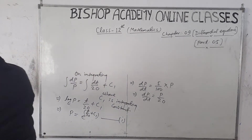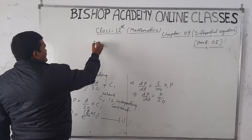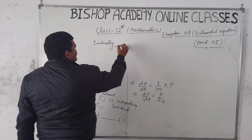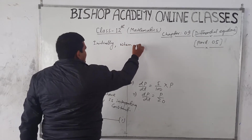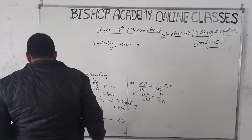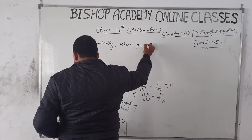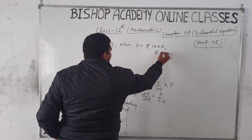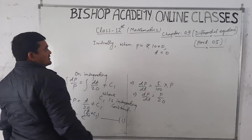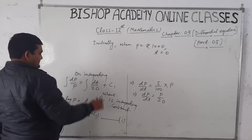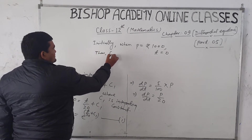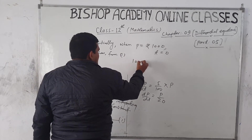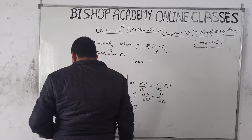Now we apply the initial condition. Initially, when T = 0, the principal P = rupees 1000. Substituting into equation 1, we get 1000 = e^(0/20) × e^C1.